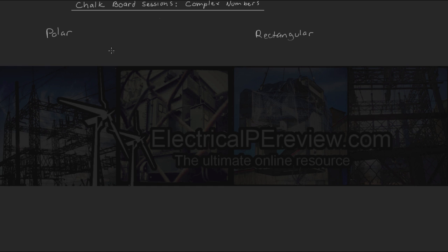Complex numbers, we've got two different ways to represent a vector. Polar, using a magnitude and an angle. And rectangular, using a real component and an imaginary component of a triangle.